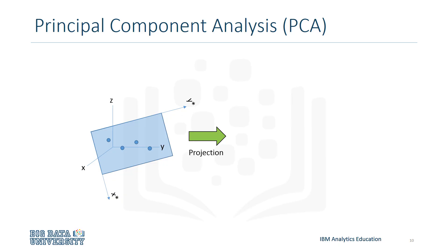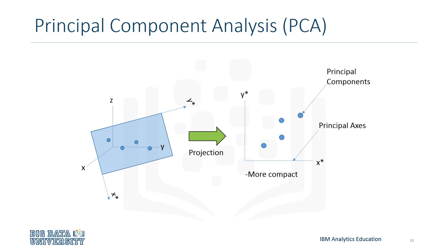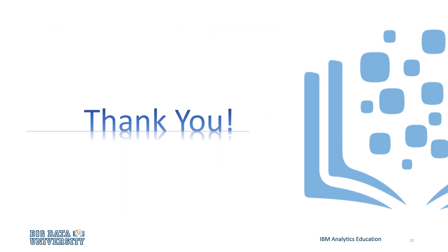When the projection of components happens, new axes are created to describe the relationship. This is called the principal axes, and the new data is called principal components. This becomes a more compact visualization for the data, and thus is easier to work with.